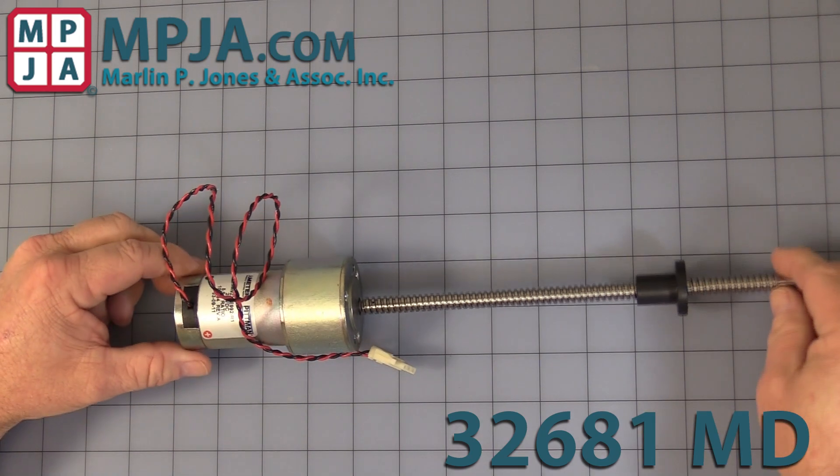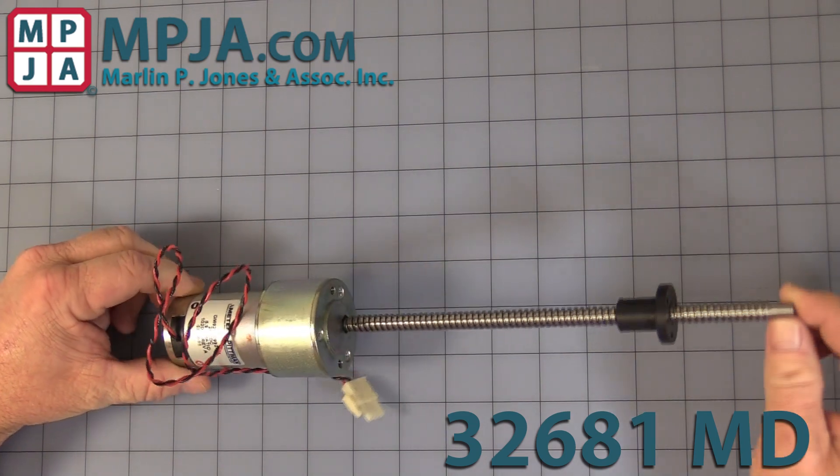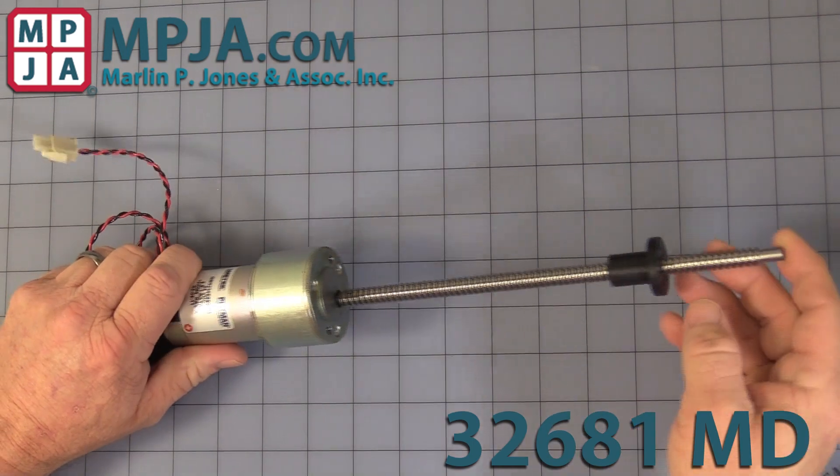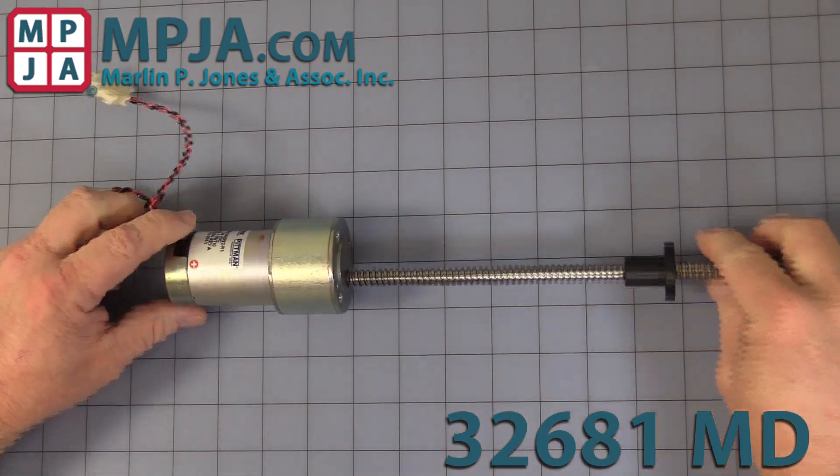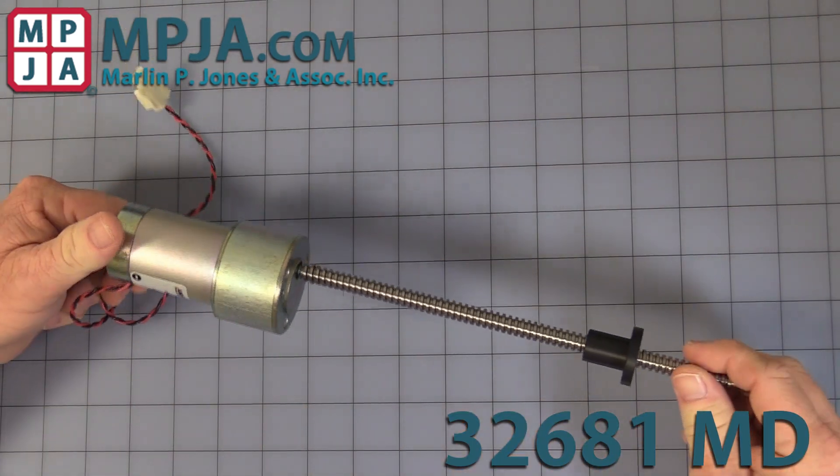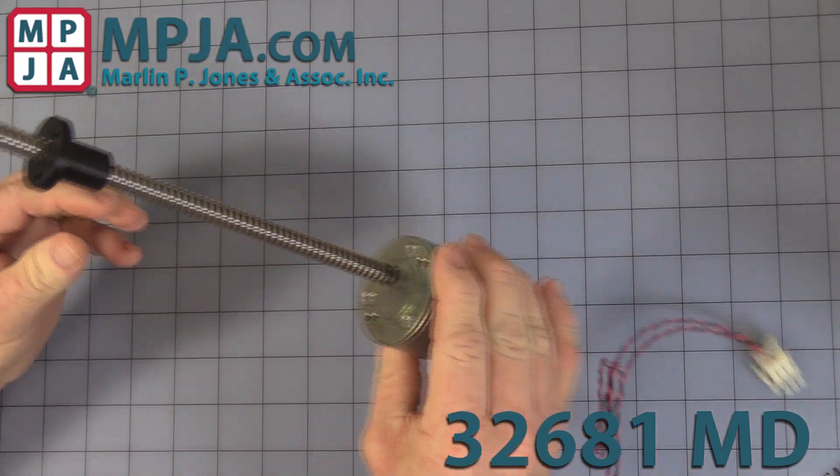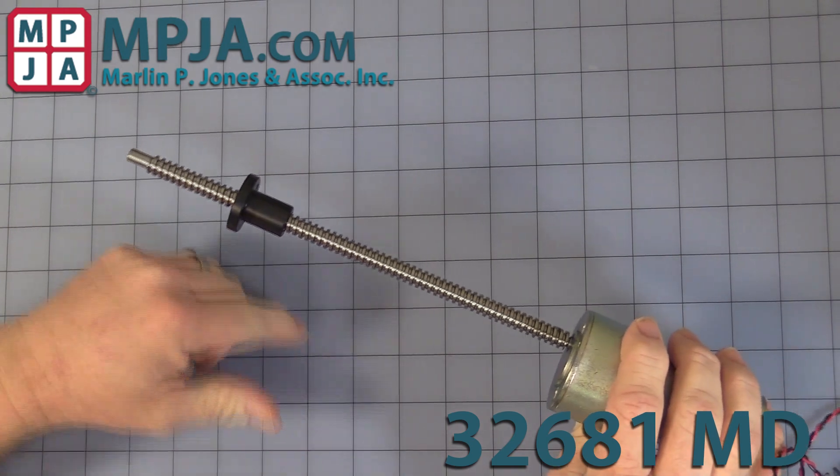Hello, today's video is on our stock number 32681MD gearhead motor with an attached lead screw. I'll give you a nice video to show you the basic layout, how you see the size of it in reference to the one inch scale here.